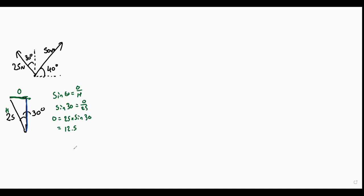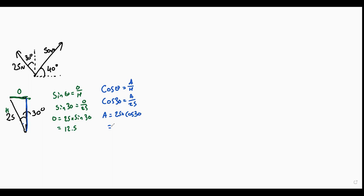Now how do I calculate the blue horizontal component? You have opposite, adjacent, and hypotenuse - use cosine, right? Yes. I'm really rusty on trigonometry. Cosine 30 equals adjacent over 25, so adjacent equals 25 times cosine 30, which is 21.7.